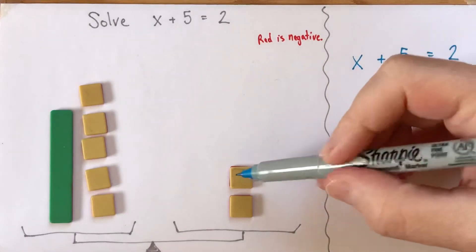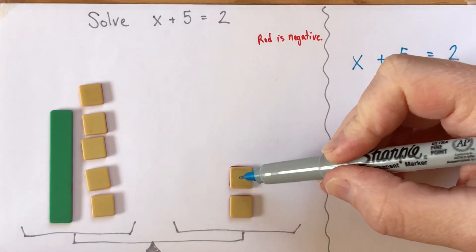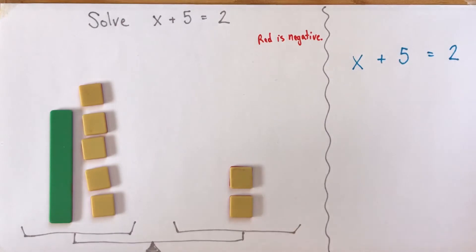But sometimes people are a little bit unsure about how to subtract 5 from 2. So I just wanted to show you an alternative with the tiles, where if you'd like, you can add negative 5 to both sides instead.